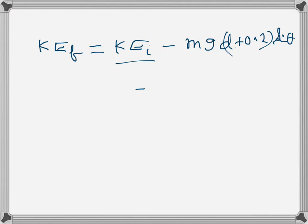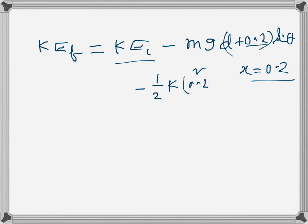The elastic potential energy of the spring due to compression is ½kx², where x is 0.2 meters. So we write ½k(0.2)². That gives us the final kinetic energy after the spring has been compressed by 0.2 meters.